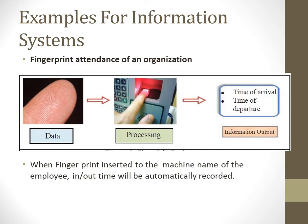I have given an example of a fingerprint system. We all mark our in and out using a fingerprint system — it is basically an attendance system. As input, it recognizes the fingerprint of the employee, processes the name, and keeps track of the time of arrival and departure. This is then used to calculate salary, overtime, and other things — it can be used as information.